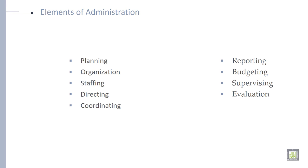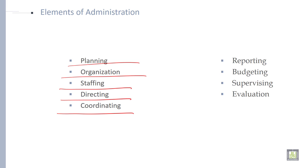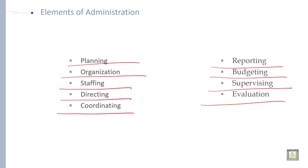Various elements of administration are planning, organizing, staffing, directing, coordinating, reporting, budgeting, supervising, and evaluation. These are the nine elements of administration.